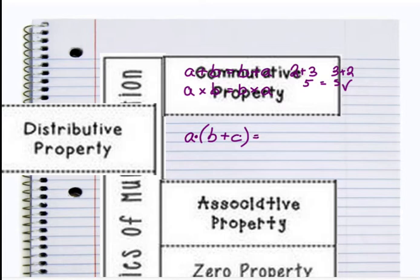Distributive property says that I need to distribute, or hand out, my letter A to both of the variables inside the parenthesis. In order to do that, I will say A times B, I'm going to keep the plus sign in the middle, plus A times C. Let's look at some numbers.